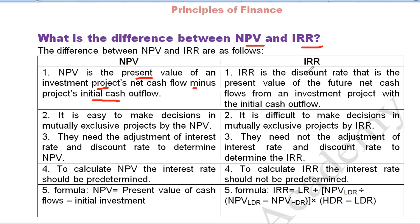The NPV is the discounted rate that is the present value of future net cash flows from the investment project with the initial cash outflow. However, it is difficult to make decisions in mutually exclusive projects by IRR. IRR is the mutually exclusive project method that presents this challenge.